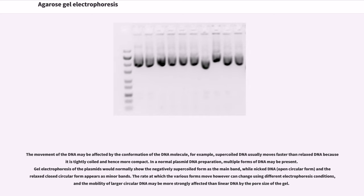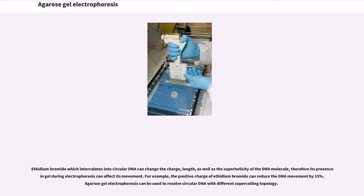The movement of DNA may also be affected by the conformation of the DNA molecule. For example, supercoiled DNA usually moves faster than relaxed DNA because it is tightly coiled and hence more compact. In a normal plasmid DNA preparation, multiple forms of DNA may be present. Gel electrophoresis of the plasmids would normally show the negatively supercoiled form as the main band, while nicked DNA (open circular form) and the relaxed closed circular form appear as minor bands. The rate at which various forms move can change using different electrophoresis conditions, and the mobility of larger circular DNA may be more strongly affected than linear DNA by the pore size of the gel.